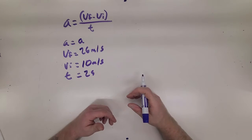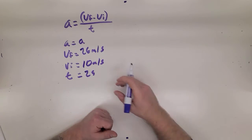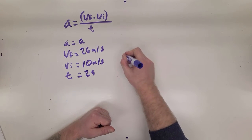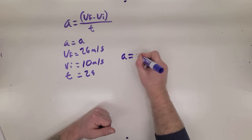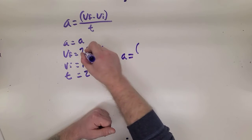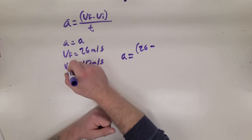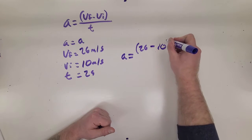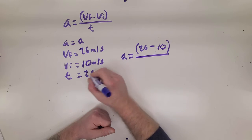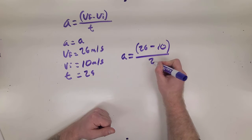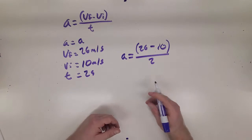Now we know everything that we need to know in order to solve for our acceleration. Let's go ahead and plug this into the equation here. So we would write A for A. VF is 26 meters. And VI was 10. Time was 2 seconds. So we'll put 2 right there.